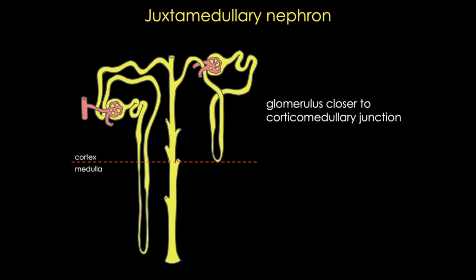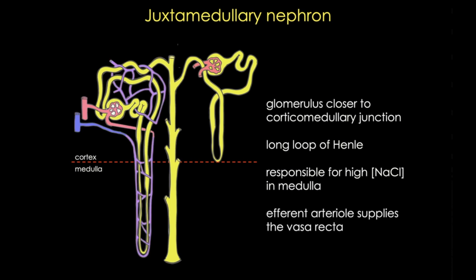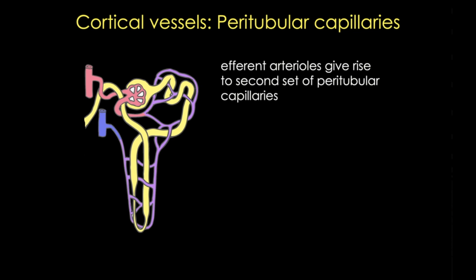In contrast, the juxtamedullary nephron has a glomerulus close to the corticomedullary junction and a long loop of Henle. It's these nephrons that establish the high salt gradient in the medulla. The efferent arteriole supplies a capillary bed called the vasa recta. So in the cortex we have glomerular and peritubular capillaries, and we have the longer vasa recta in the medulla.